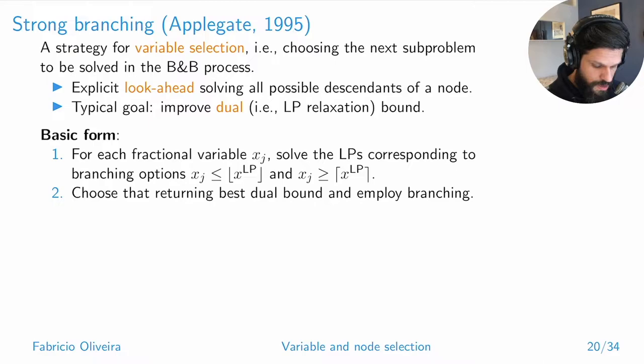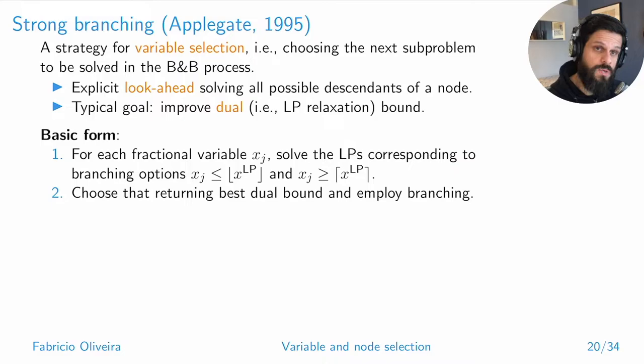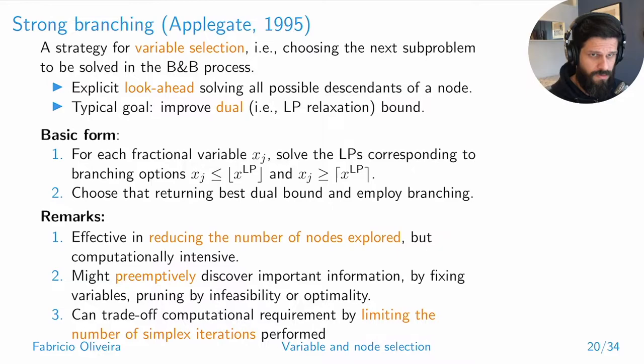In its most basic form, for each fractional variable you solve the LPs for the corresponding branch operators and choose the one that gives the best dual bounds. So if you have x1 and x2 both fractional, you check what would happen if you branch on x1, what would happen on x2, and pick the one that looks best.